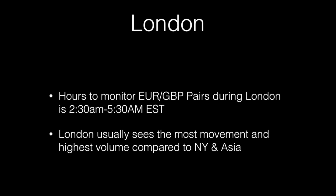First thing we're going to talk about is London. Hours to monitor for all Euro and British Pound pairs during London is between 2:30 a.m. and 5:30 a.m. Eastern Time. London usually sees the most movement and has the highest volume compared to New York and Asia.